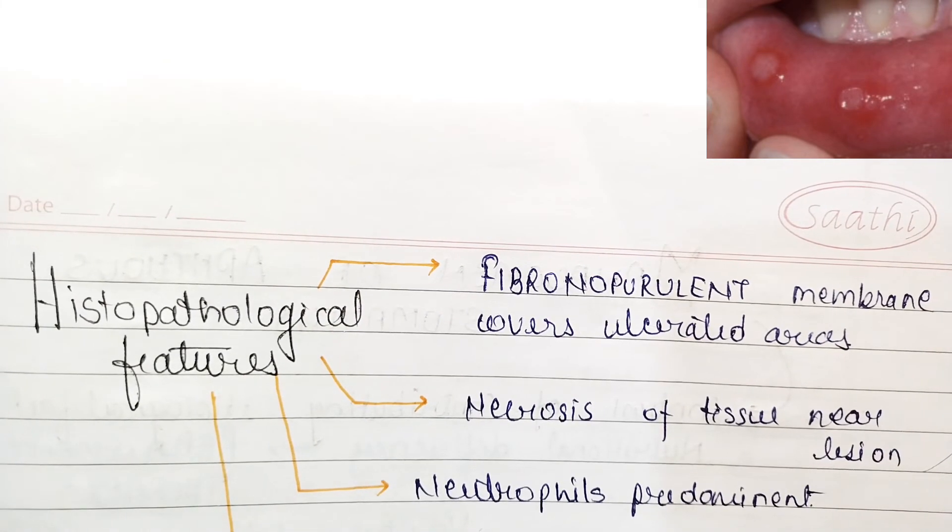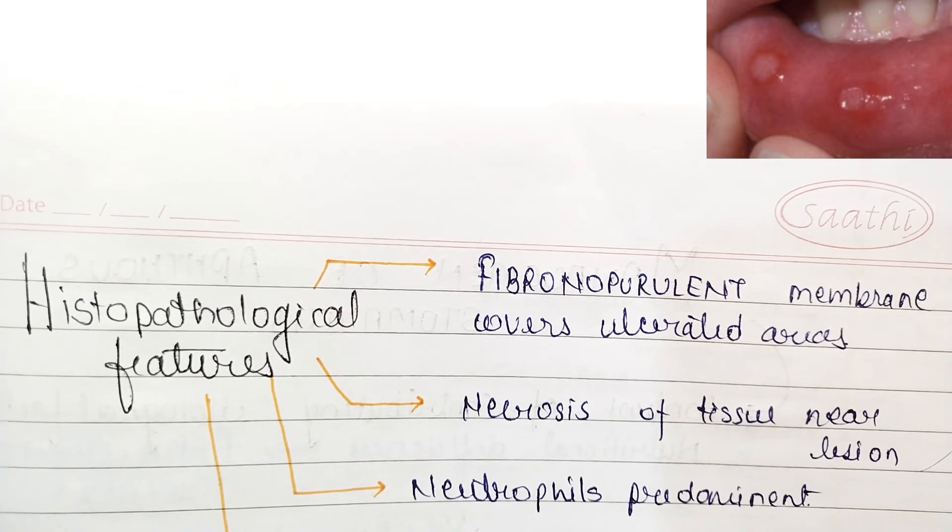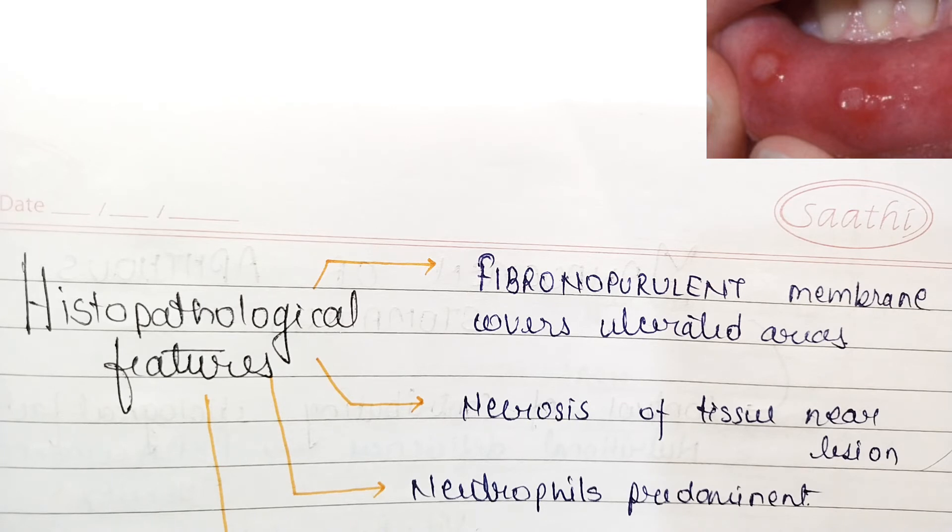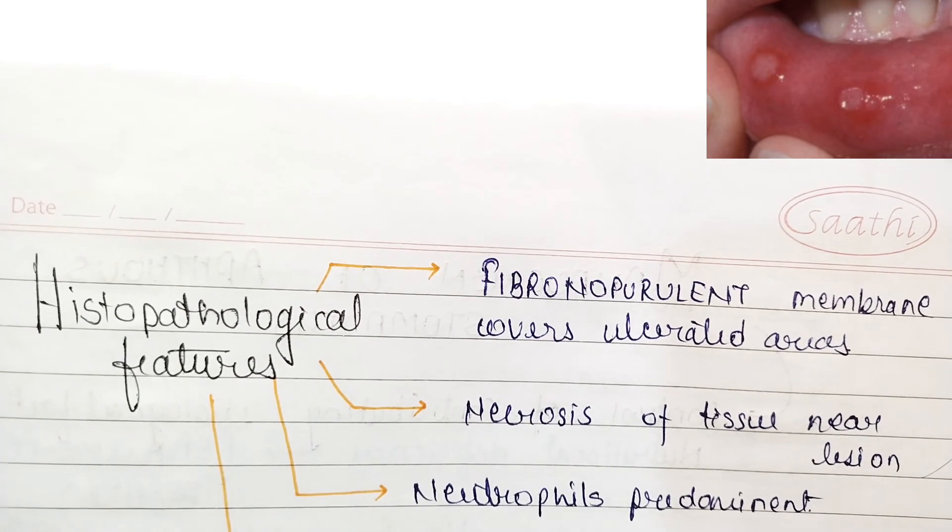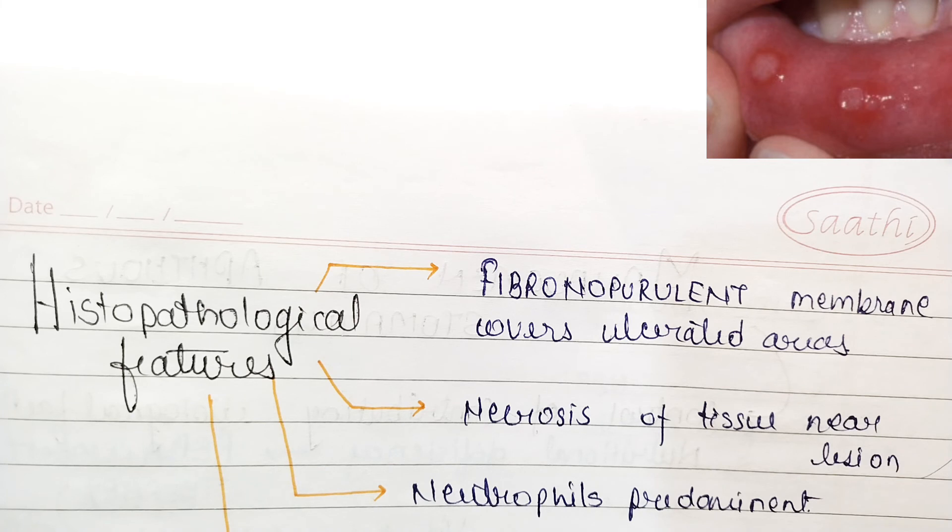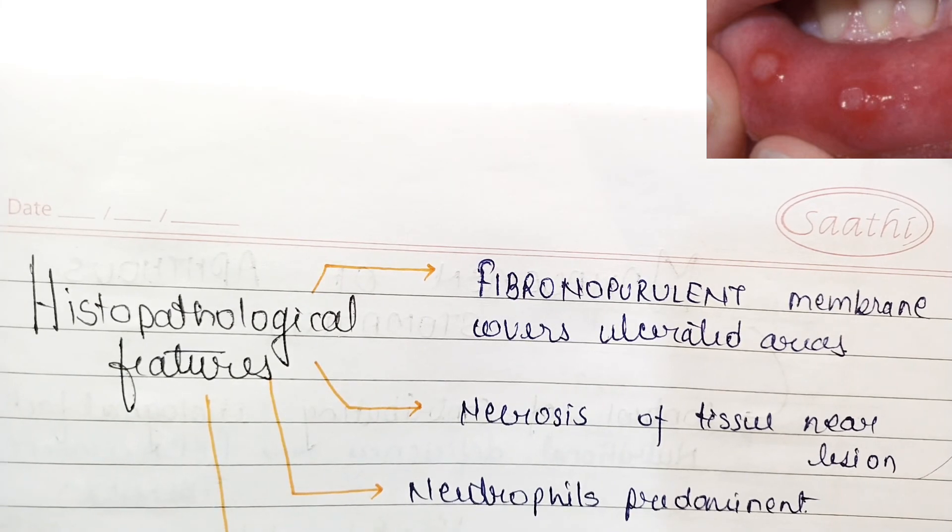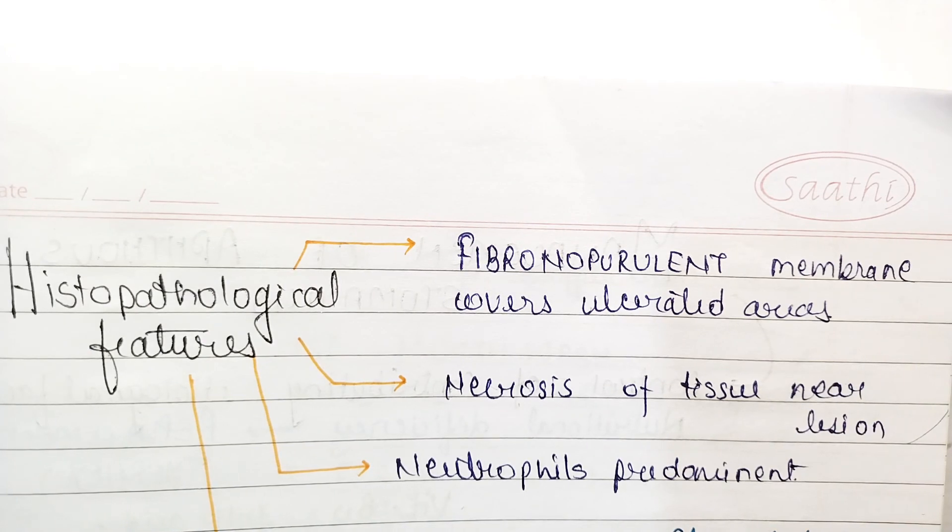So this is all about the clinical features, histological features and differential diagnosis of recurrent aphthous stomatitis. This is a very important topic in oral medicine. I hope this video helps you in your academics. In the next video, part three, we are going to discuss the complete management of aphthous stomatitis. We made part one in which we discussed etiology, introduction and classification. Thank you so much for watching this video. I'll see you in the next video.